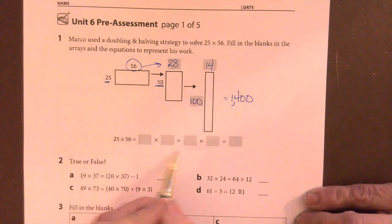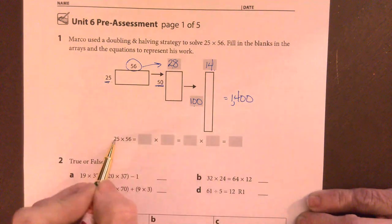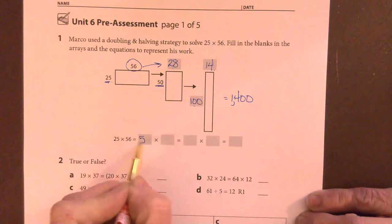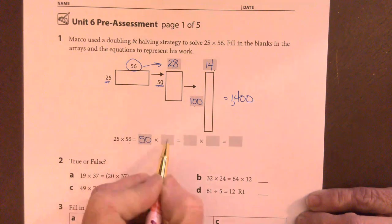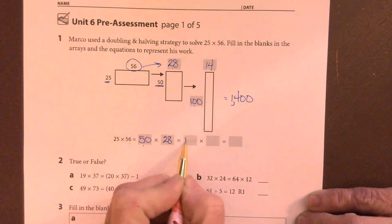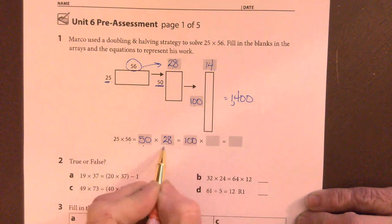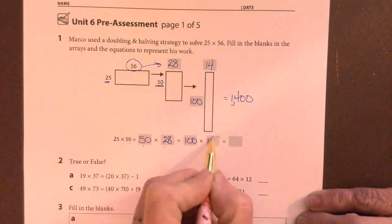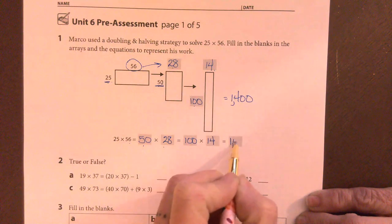So we just copy these problems into the gray boxes. Doubling the 25, we got 50. Half of 56 was 28, twice 50 was 100, half of 28 was 14, and our answer was 1,400.